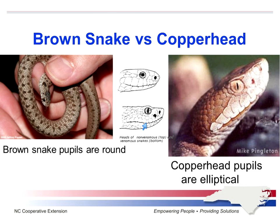Not that you're going to get really close to this, but if someone brings it to you in a jar, it's really easy to see. The brown snake that was brought to me — it was very easy to see that it had a round pupil. You don't even have to identify the snake. You can just look at the pupil.